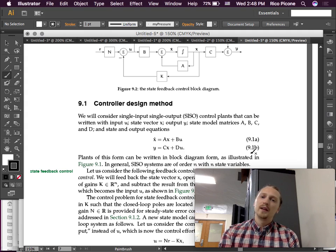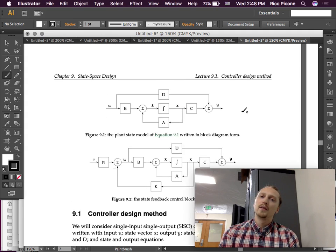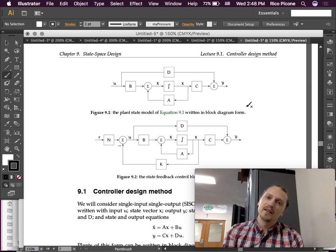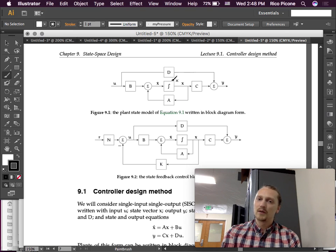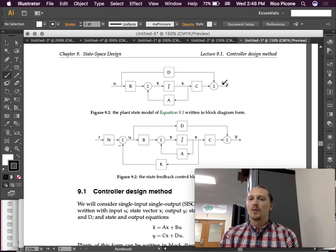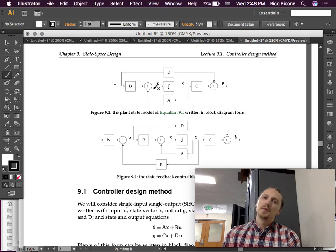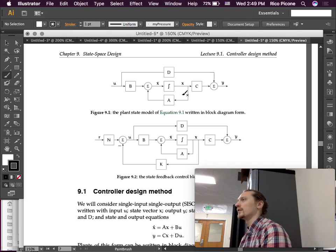Plants of this form can be written in the block diagram form shown in figure 9.1. If you have an input coming in, it goes through this internal state and it comes out as an output. Essentially all this is, is the state and the output equation written in block diagram form. Y equals the sum of CX plus DU, that's the output equation. X dot equals the sum of AX plus BU, and the relationship between X dot and X is one of integration.